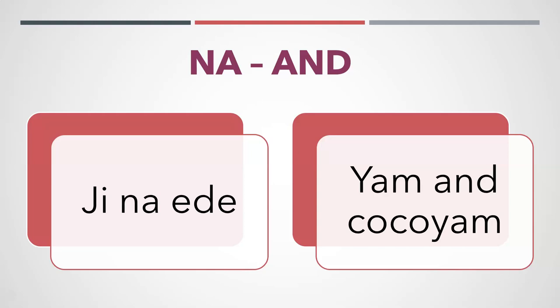You are going to get it more. So here we have Ji Na Ede. Ji Na Ede is combining two nouns together: Yan and Kokoyan. And if you notice — if you haven't gone through my lesson on Na as an auxiliary verb, I'm going to put the link somewhere. If you go through that lesson, you are going to notice how we know it's acting as an auxiliary verb and not a conjunction: it is going to have a hyphen here. But in this case, we do not have a hyphen.